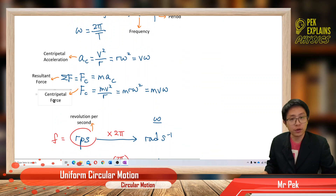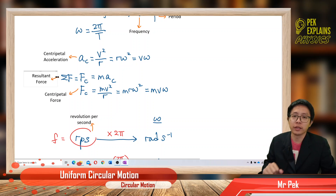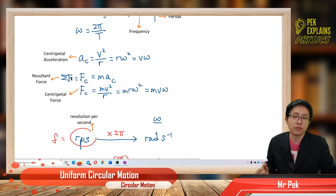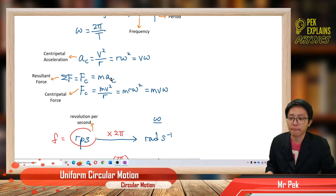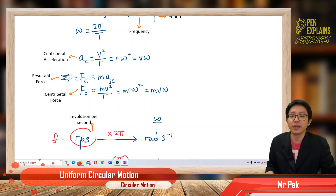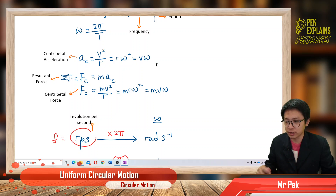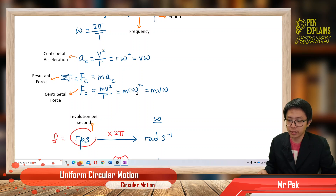Next, centripetal force. Centripetal force is actually the resultant force of all available forces acting on an object. Since it is a resultant force, it equals ma — resultant force equals mass times acceleration. Here the acceleration is centripetal acceleration, so centripetal force equals mv²/r, or mrω², or mvω. You just substitute the centripetal acceleration formulas.